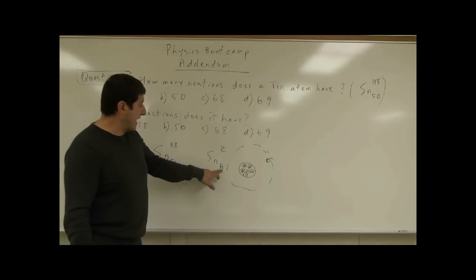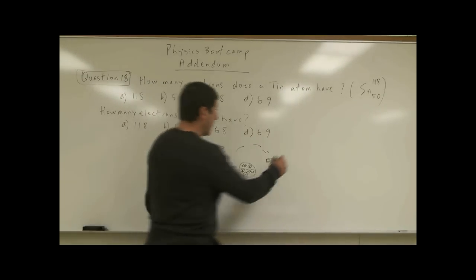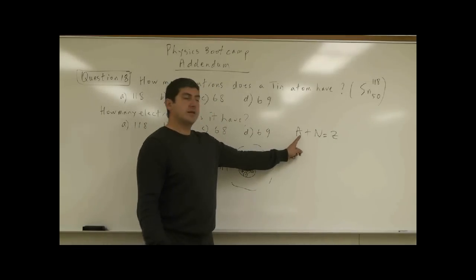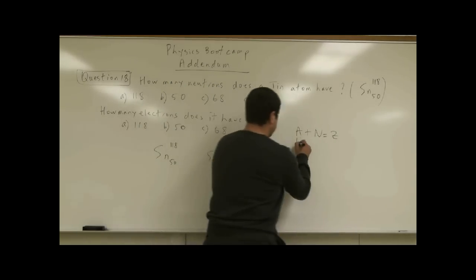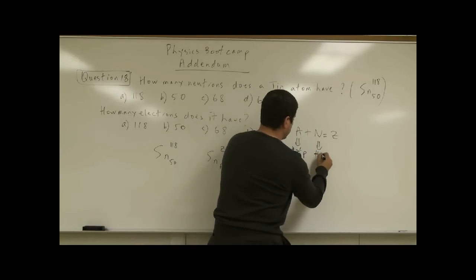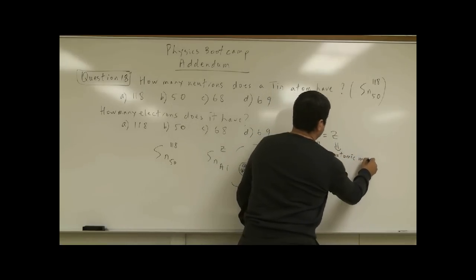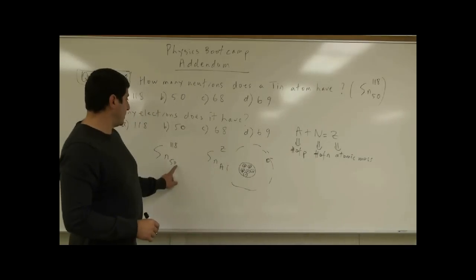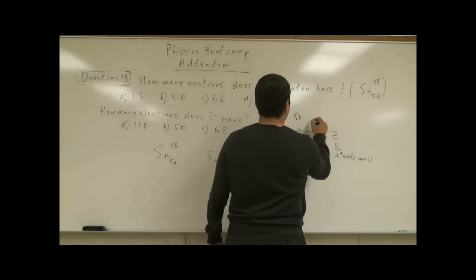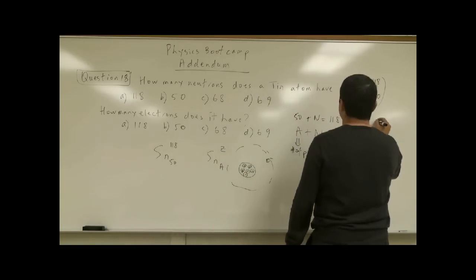So the atomic number A plus the neutron number N is equal to the atomic mass Z. The atomic number is the number of protons, N is the number of neutrons, and together they equal the atomic mass. In this case we are given A = 50, and the atomic mass Z = 118, so N = 118 − 50 = 68.